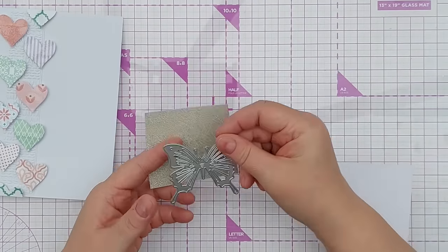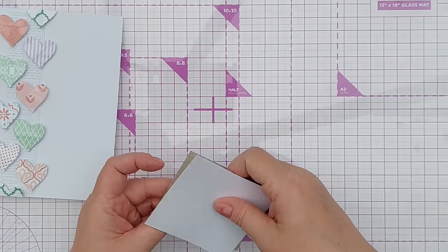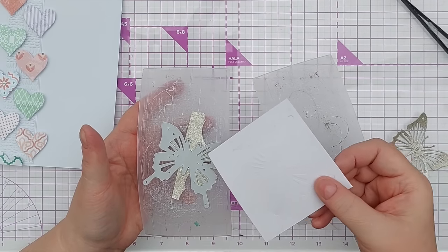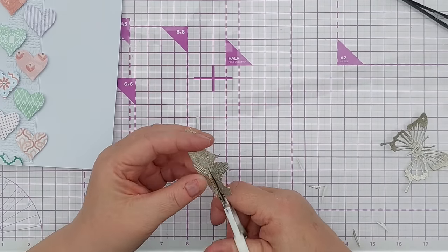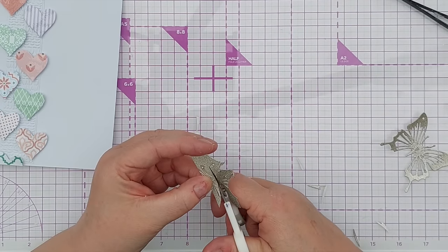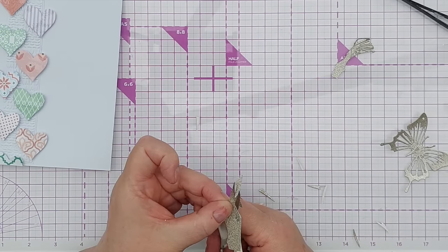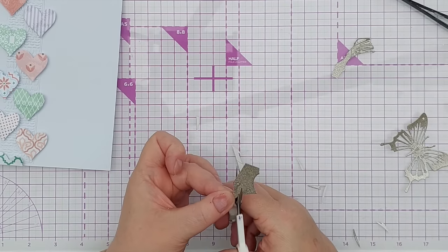For an embellishment, I've got this large butterfly die which I picked up at a charity shop and I'm going to cut that out of gold glitter cardstock. I'm also going to cut a second body out of the glitter paper. Just cut the wing portions off. And the antenna.